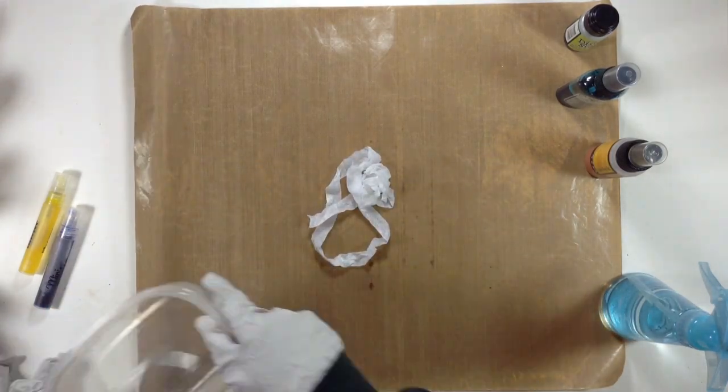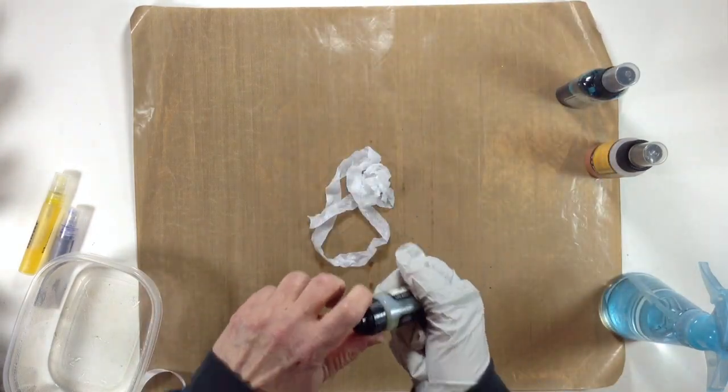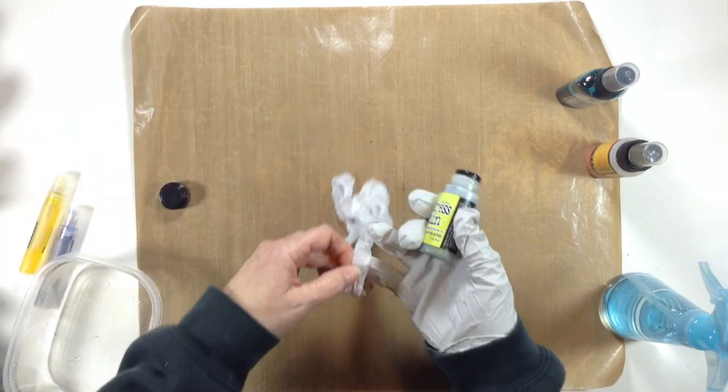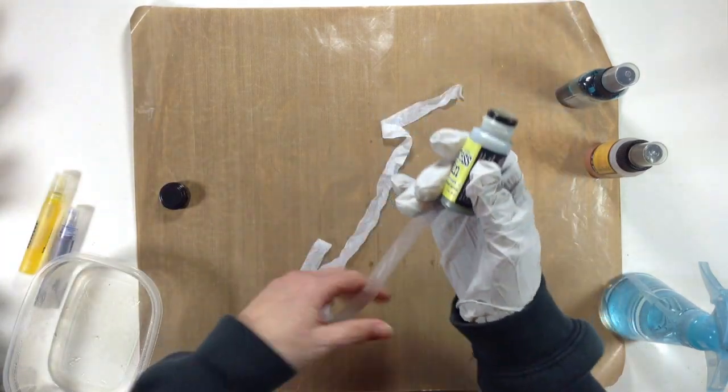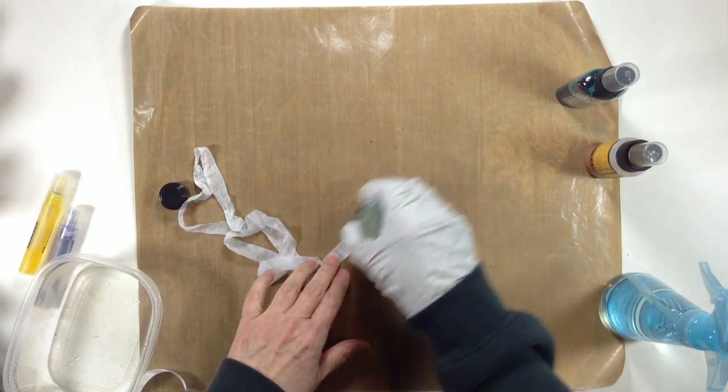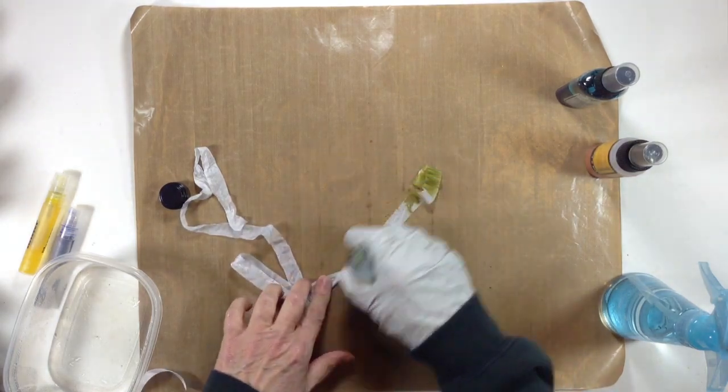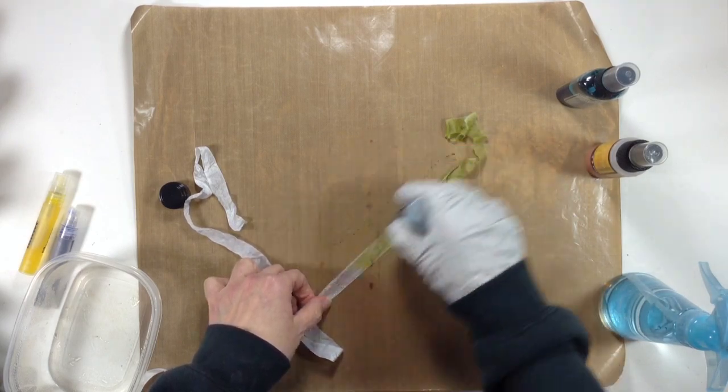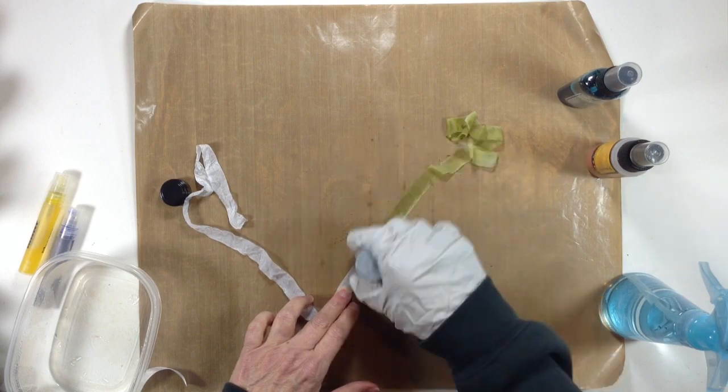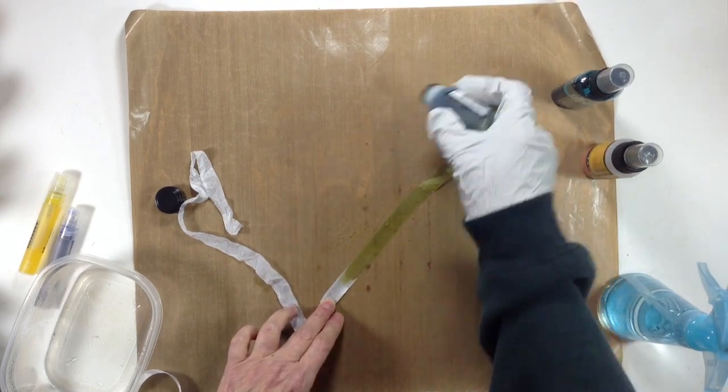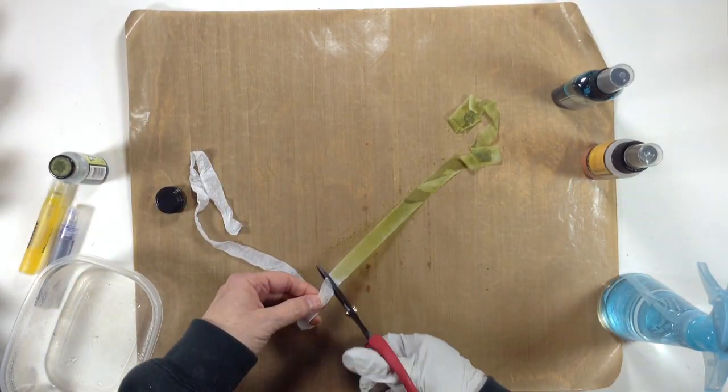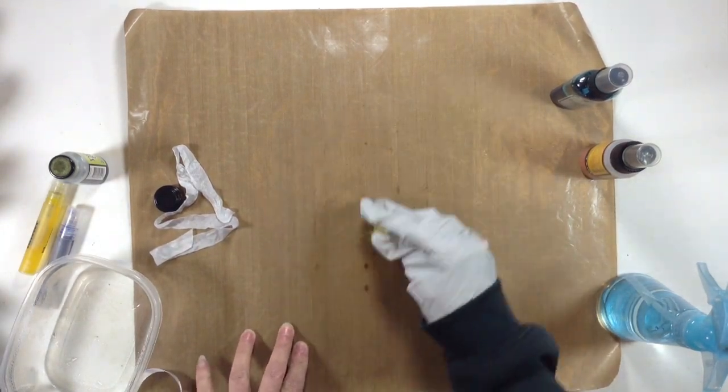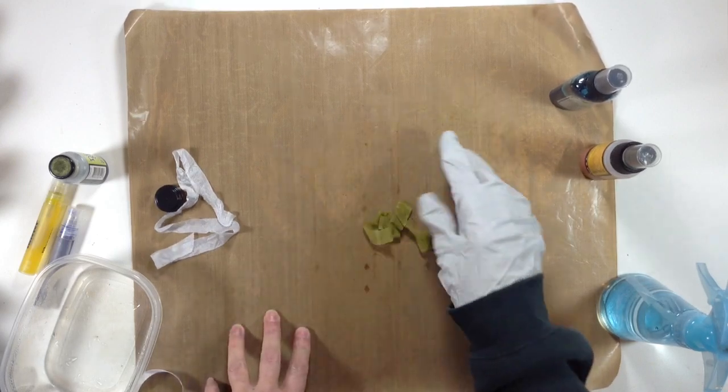The first one I'll show you is the Distress Stains. This is Shabby Shutters which is one of my favorite greens. Because they have this dabber on here, it's just as easy to go ahead and line it up like this and just kind of go over your seam binding and wipe that off. Then you'll have a little excess here, just wipe it up on your mat. This is the Ranger's Inky Central craft mat.